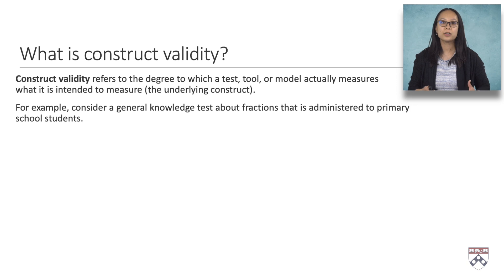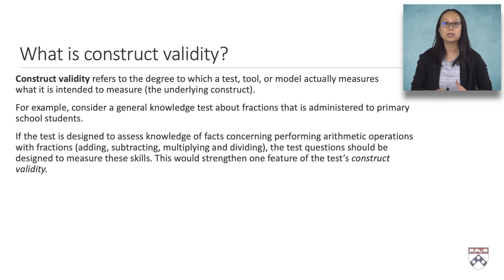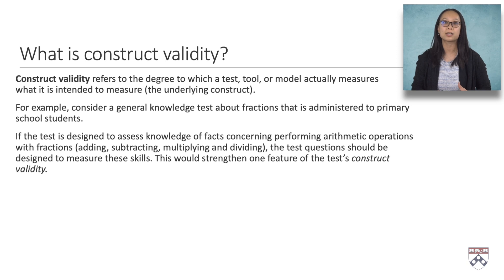For example, consider a general knowledge test about fractions, administered to primary school students in a typical class setting. The focus is on a specific topic — namely fractions — and if the test is designed to assess knowledge of facts concerning performing arithmetic operations with fractions, such as adding, subtracting, multiplying, and dividing, the test questions should be designed to measure these specific skills. If they do, then this is an example in which the test has construct validity.